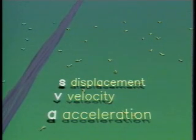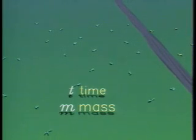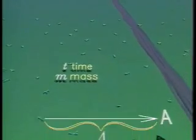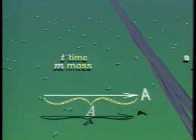Ordinary quantities such as time and mass are scalars. In equations, scalars are written in italics. The magnitude of a vector is also a scalar — the same letter, but in italics.